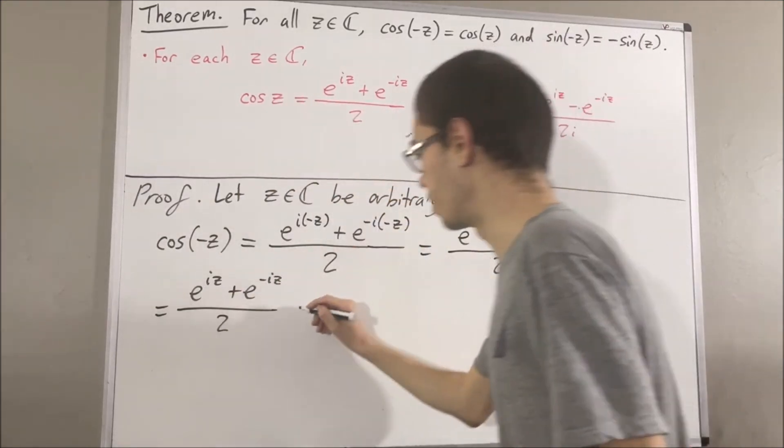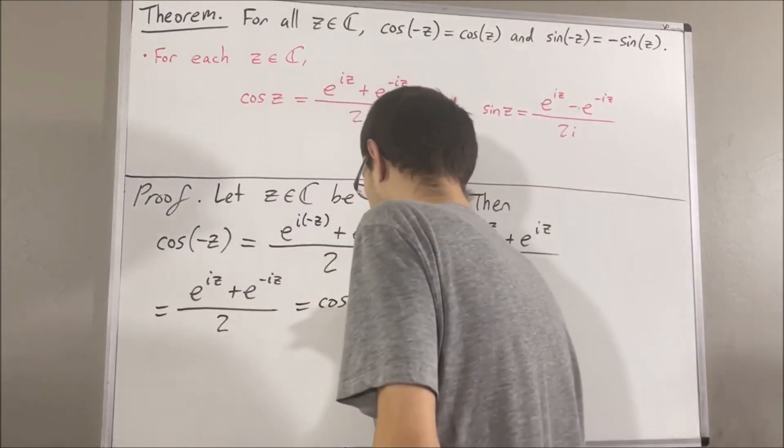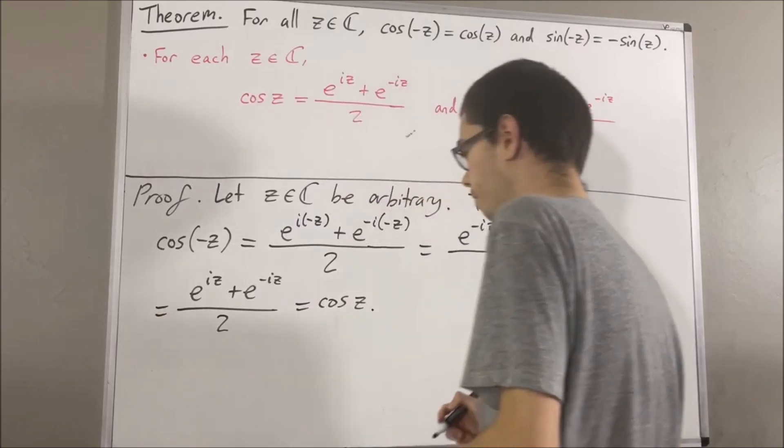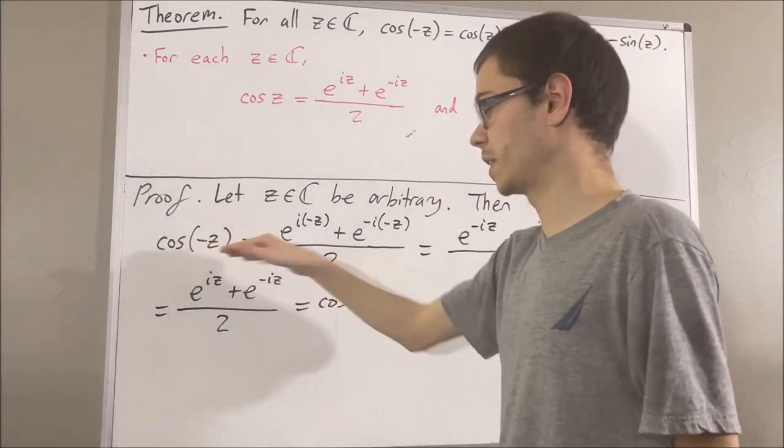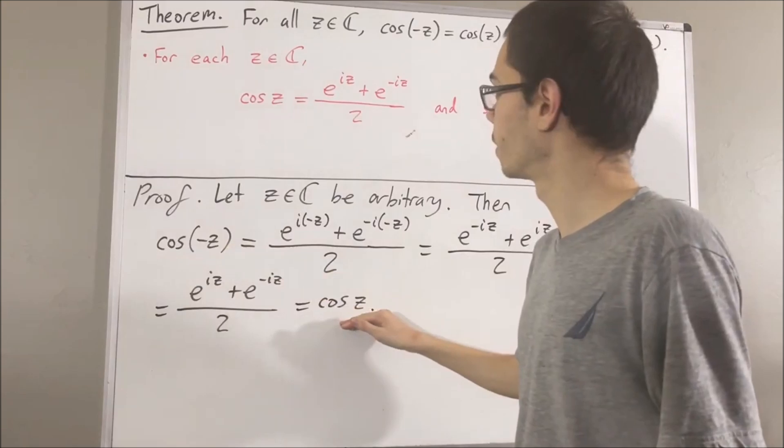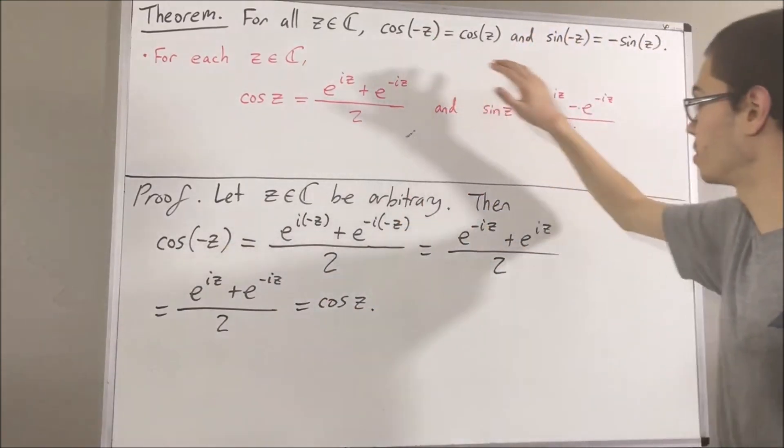But then, by definition, this is precisely the cosine of z. So we've shown that cosine of negative z equals cosine of z. We've dealt with cosine; now let's deal with sine.